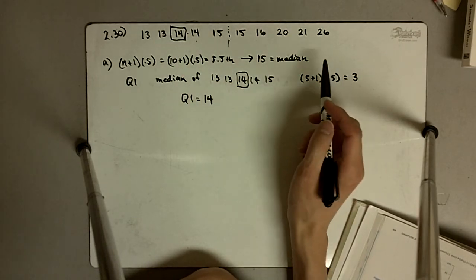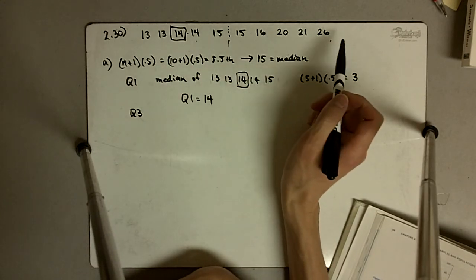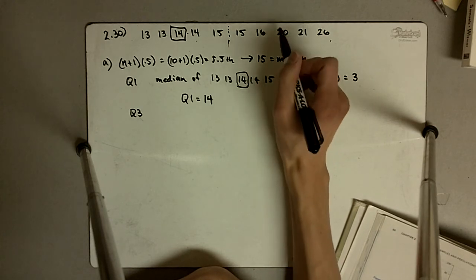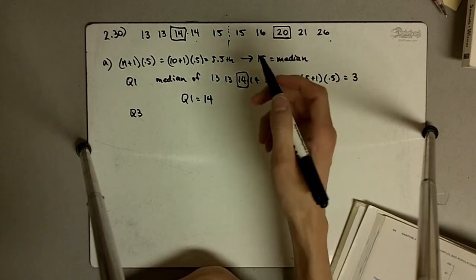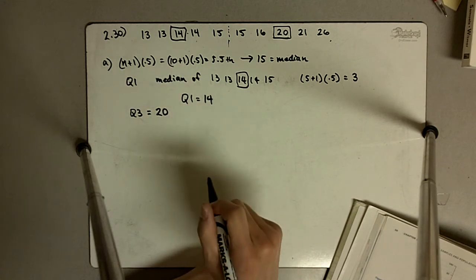Using the exact same technique for Q3, there's 5 numbers here, so the median is going to be the third number here, so the median of the upper half numbers will be 20 and that is Q3, so Q3 is equal to 20.